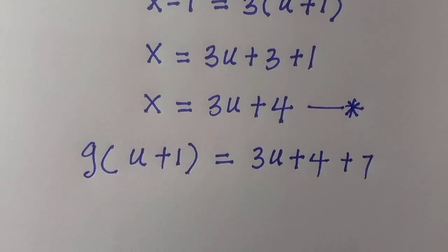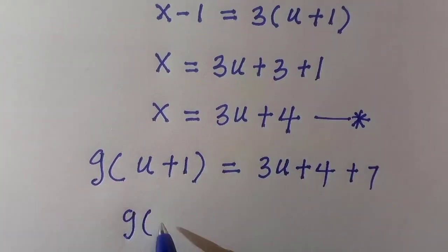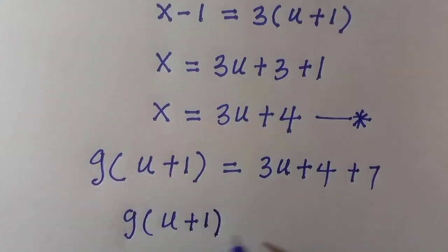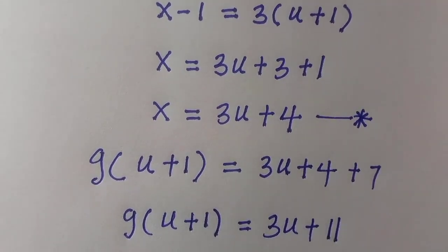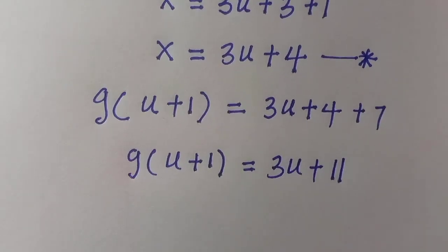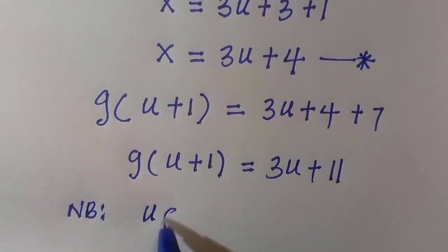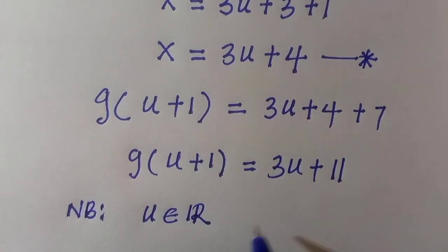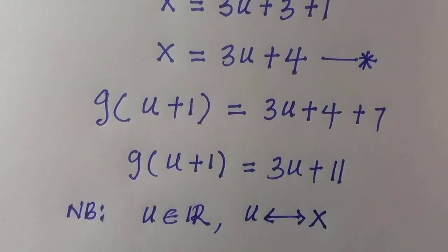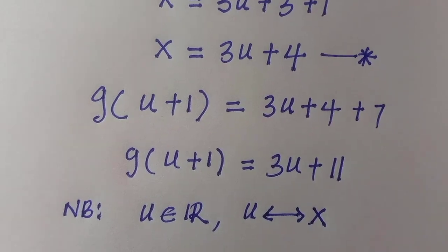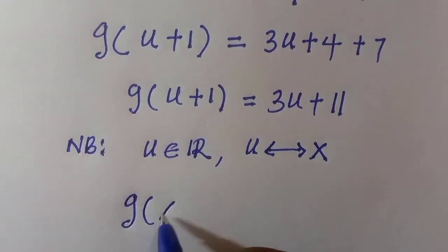If this still remains g of u plus one, which equals, we add 4 plus 7, this becomes 3u plus 11. Here we can note that the value of u is a member of real numbers, therefore u is still the same thing as x. So by replacing u with x, we have the result which is g of x plus one.